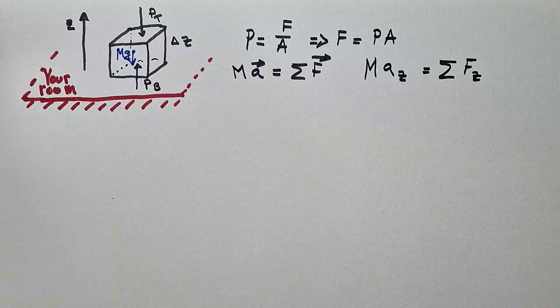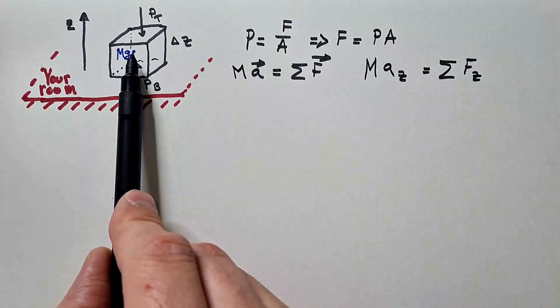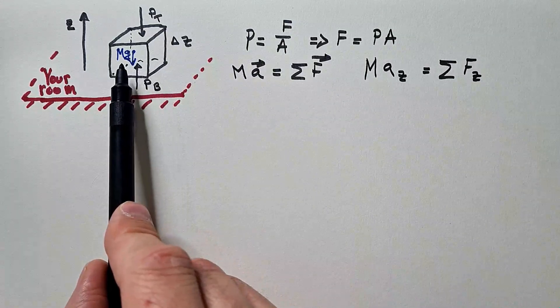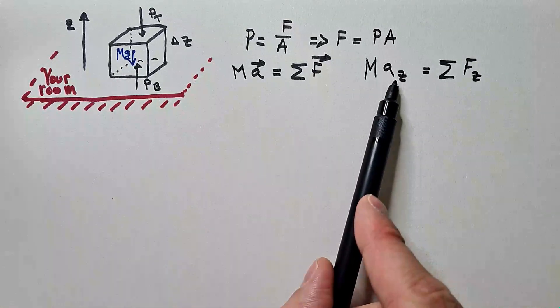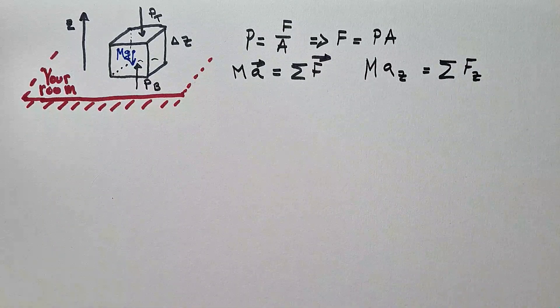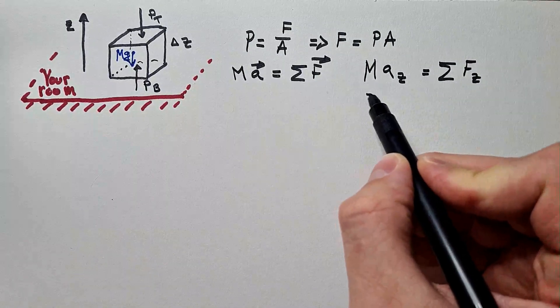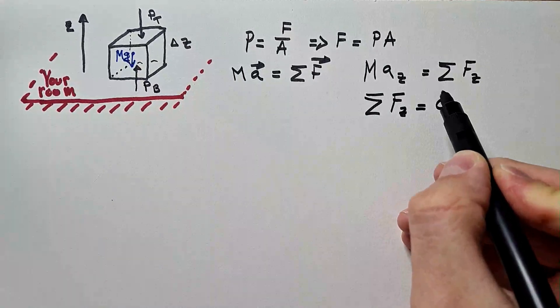Mass times acceleration in the z direction is the sum of all forces in the z direction. Now, we introduce assumption. And that is that this box of air is not accelerating. It is static, or it is moving with constant velocity. But there is no accelerations in the z axis. If we adopt that assumption, that means that the sum of all forces in the z direction is equal to zero.